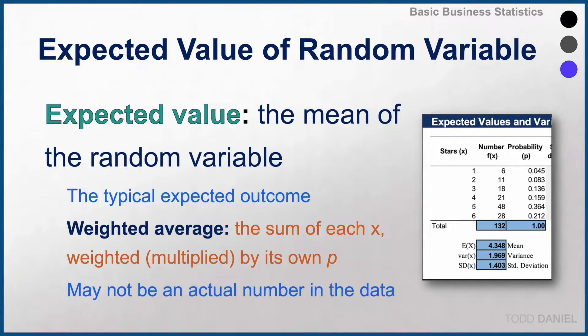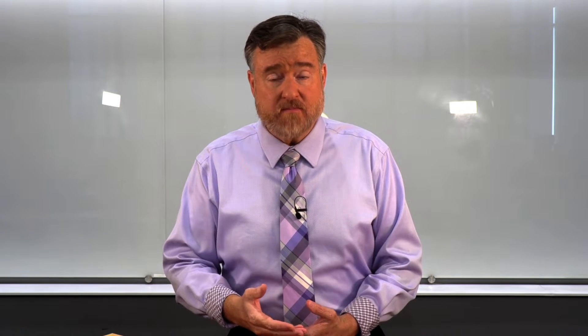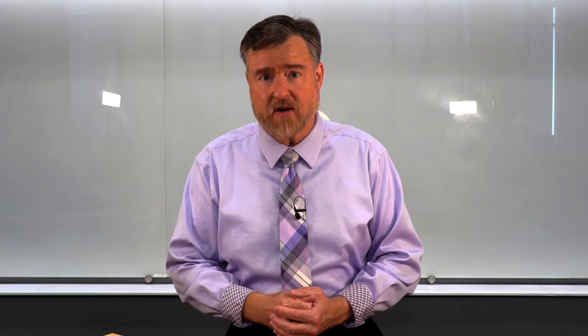Now this expected value may or may not be an actual value in the data set. For example, the expected value could be 3.5 stars, even though no patron ever assigned exactly 3.5 stars.